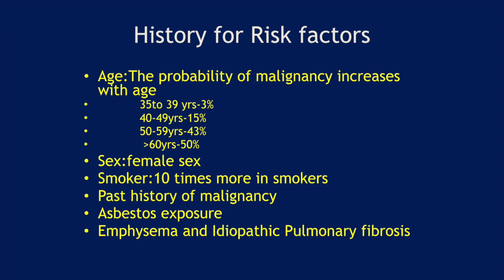If not, then we have to assess for the risk of malignancy. Let us look at the history for risk factors. First, age — the probability of malignancy increases with age: 35 to 39 years, 3%; 40 to 49 years, 15%; 50 to 59 years, 43%; and more than 60 years, 50%.